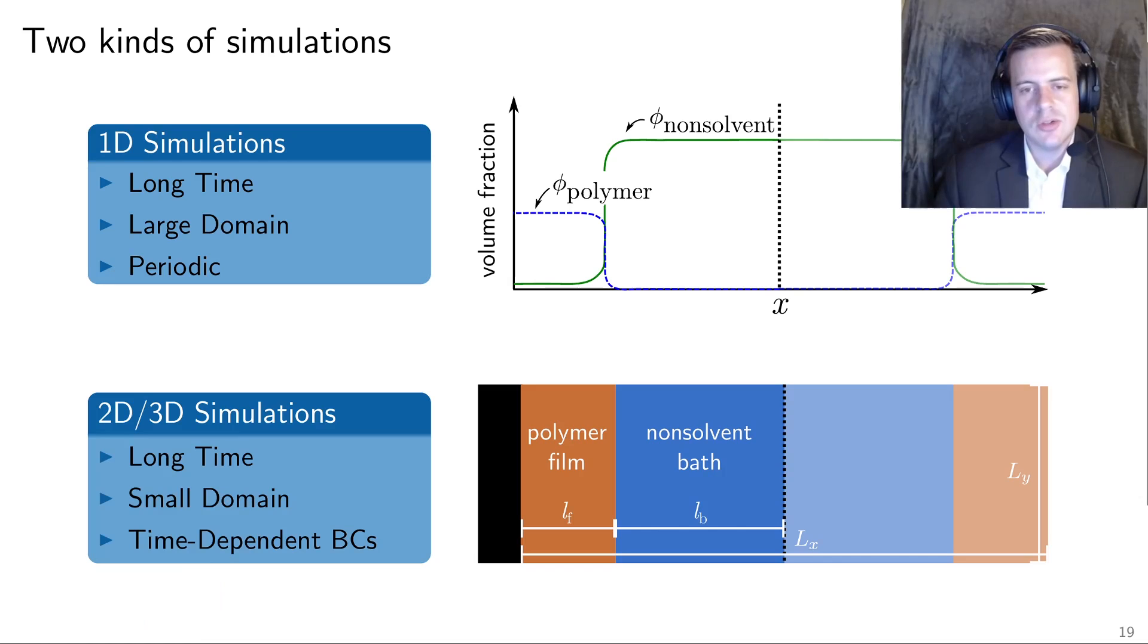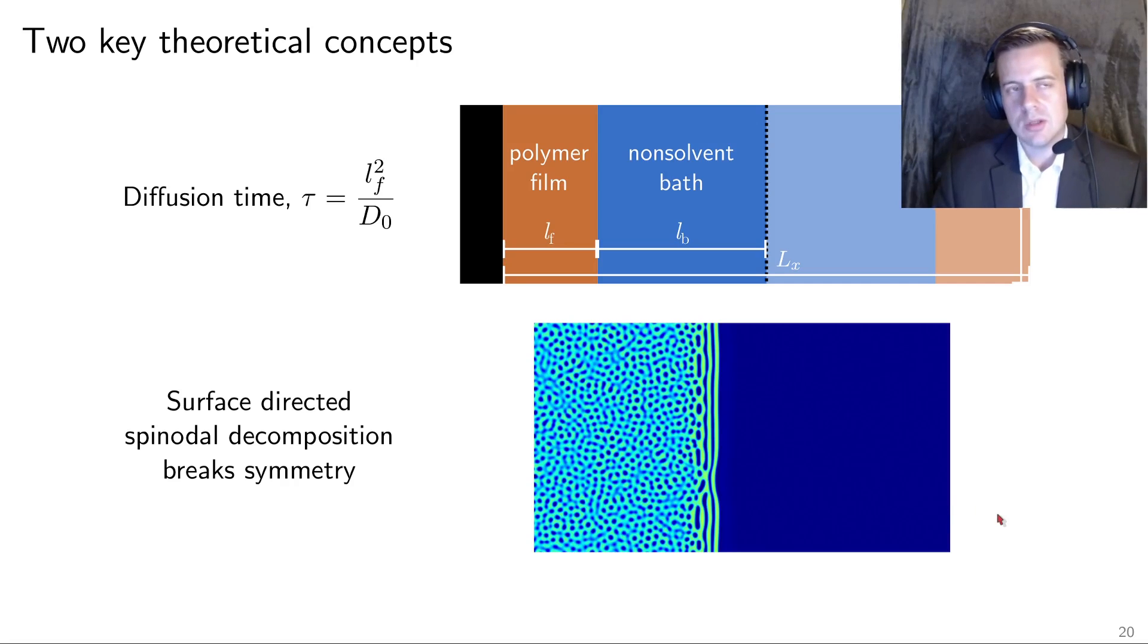We need to expand our methods a little bit. We're going to do two different kinds of simulations. We're going to do a one dimensional simulation where we can do a really big bath. It's hard to do a really large three dimensional system. So we do these 1D simulations that let us look at the mass transfer. And then we're going to couple those to two dimensional and three dimensional simulations. We can use time dependent boundary conditions to couple our solutions together and look at what happens as the microstructure evolves. You'll see me bounce back and forth between these 1D simulations and two dimensional or three dimensional simulations to look at the microstructure.